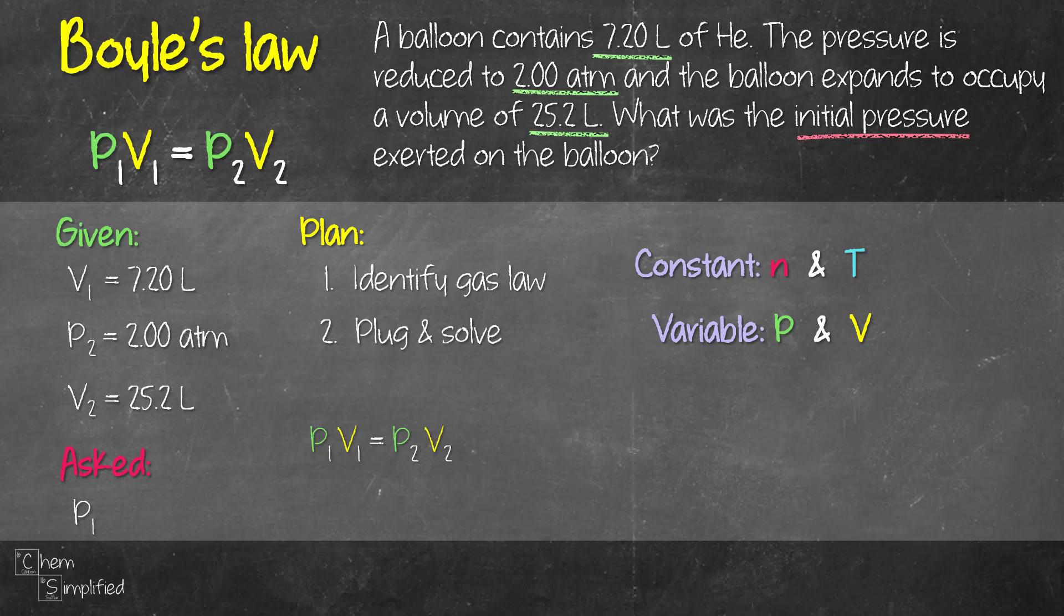Let's do a little bit of algebra first so we can rearrange the formula to give us P₁. We divide both sides of the equation with V₁ to get rid of V₁, and that gives us P₁ on the side. So P₁ equals P₂ times V₂ divided by V₁. All we have to do now is plug in the values for P₂, V₂, and V₁, and that comes out to be 7.00 ATM.